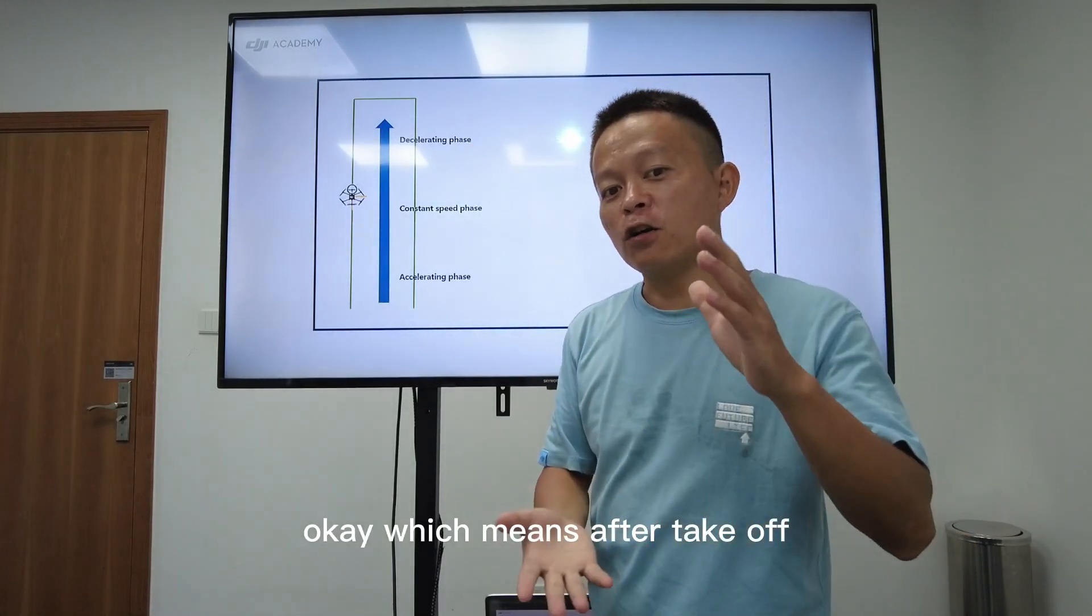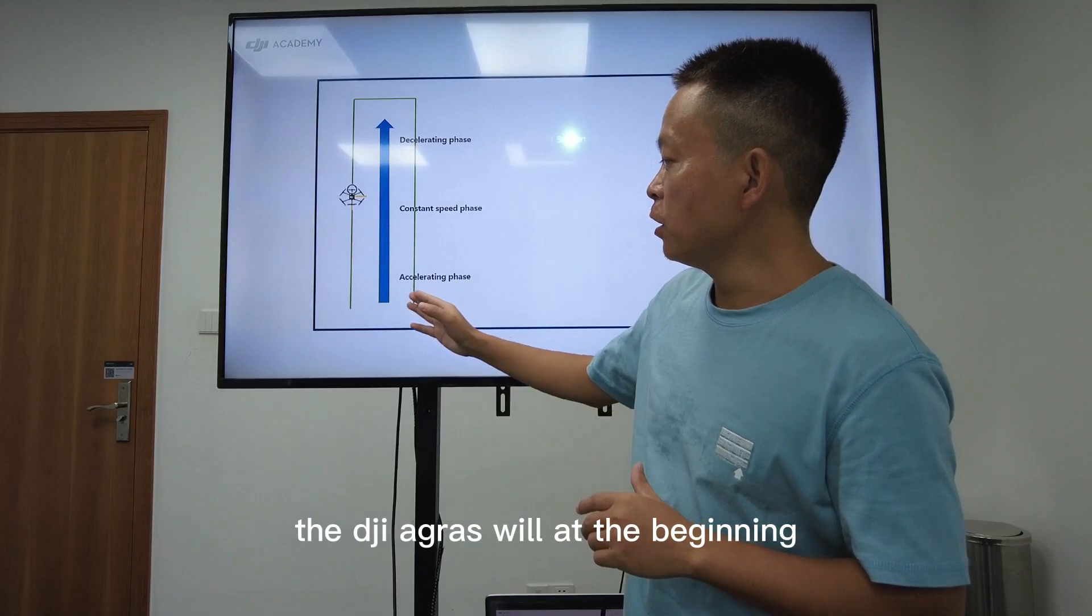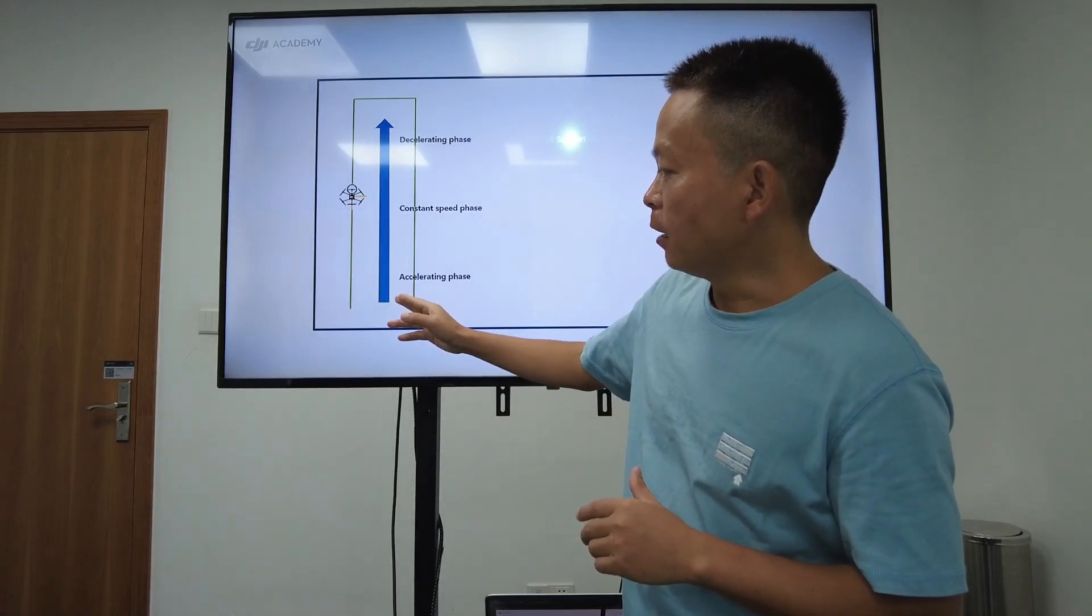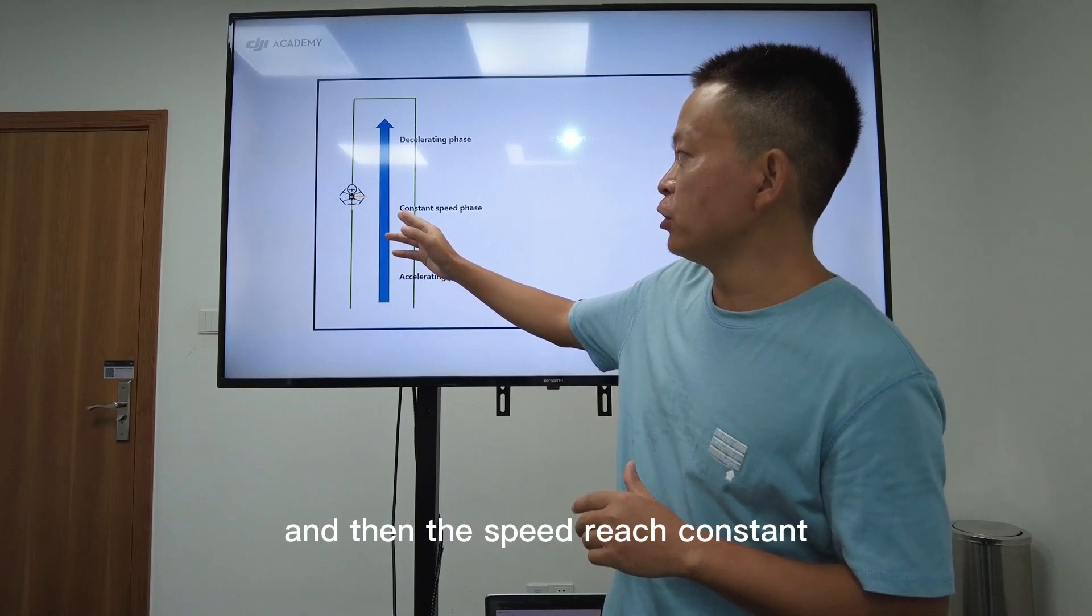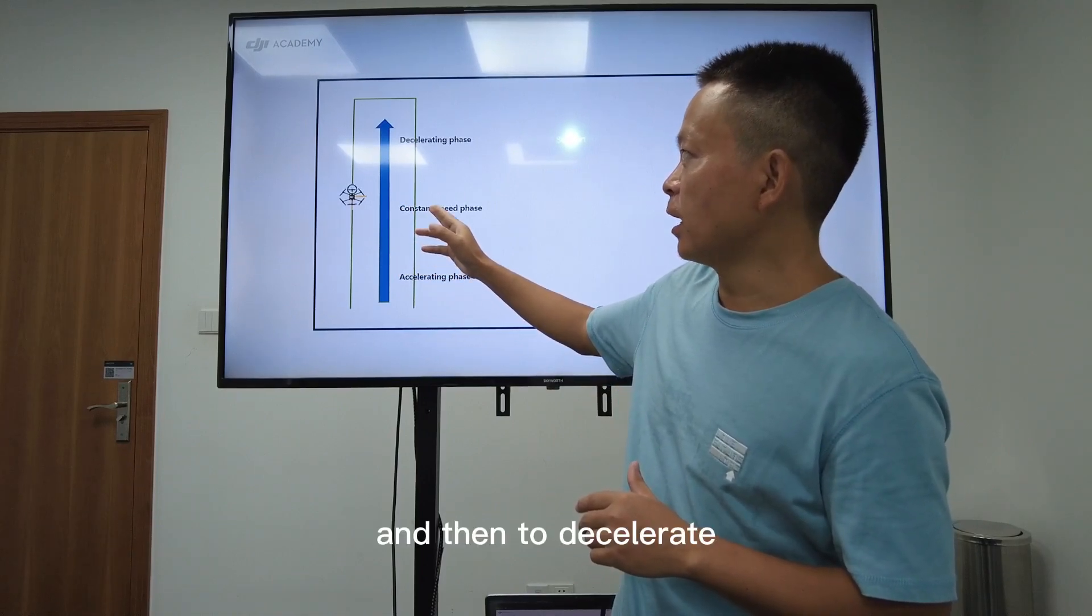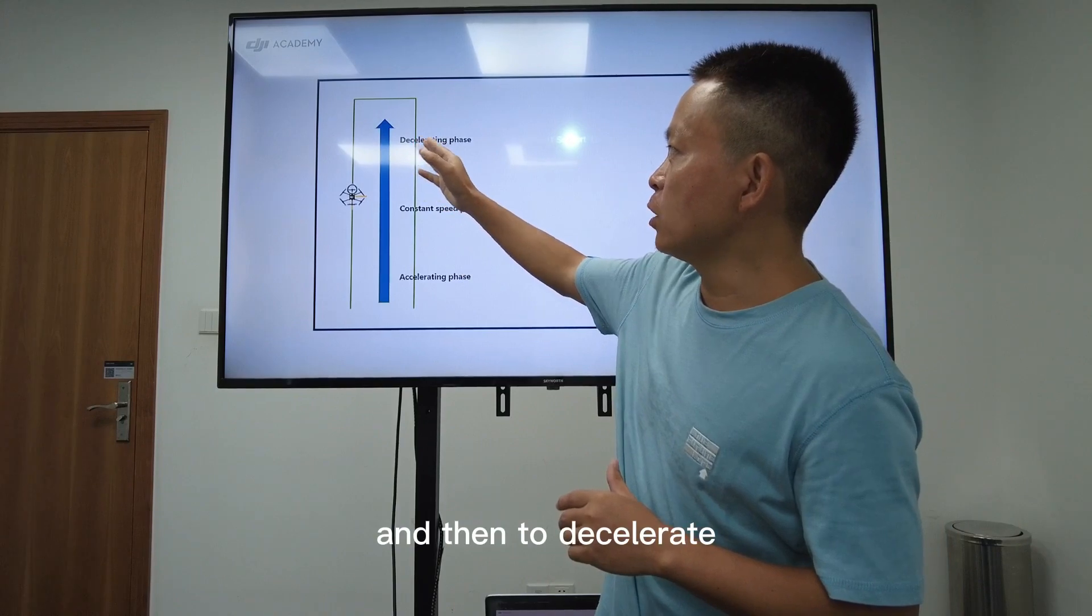Which means after takeoff, the DJI Agras will at the beginning accelerate, and then the speed reaches constant, and then decelerates.